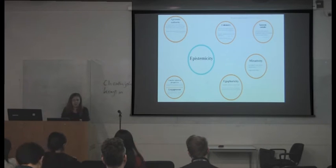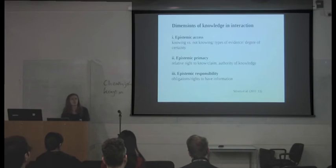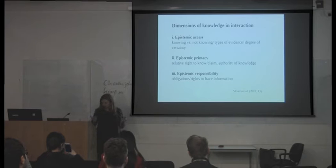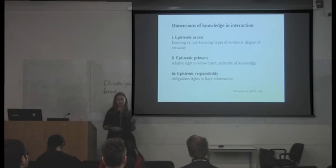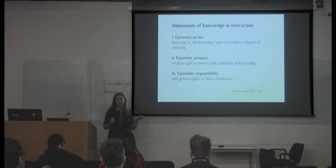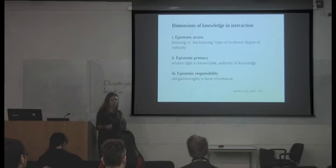Within conversation analysis there has been quite a lot of work on different dimensions of knowledge and interaction, done by conversation analysts working on more familiar languages. We've got epistemic access — knowing versus not knowing, types of evidence, degrees of certainty — which already covers evidentiality and epistemic modality. Then epistemic primacy, related to the right towards knowledge: how much can I know, and how much can I know with respect to you? And third, epistemic responsibility — obligations or rights to have certain information, arising by virtue of context. For example, if you approach a professor, the professor has an obligation towards knowing certain knowledge.